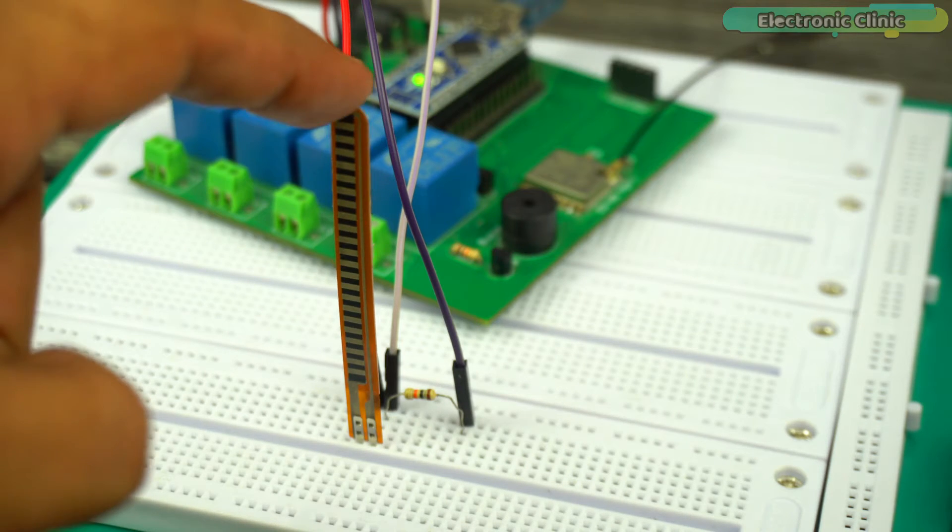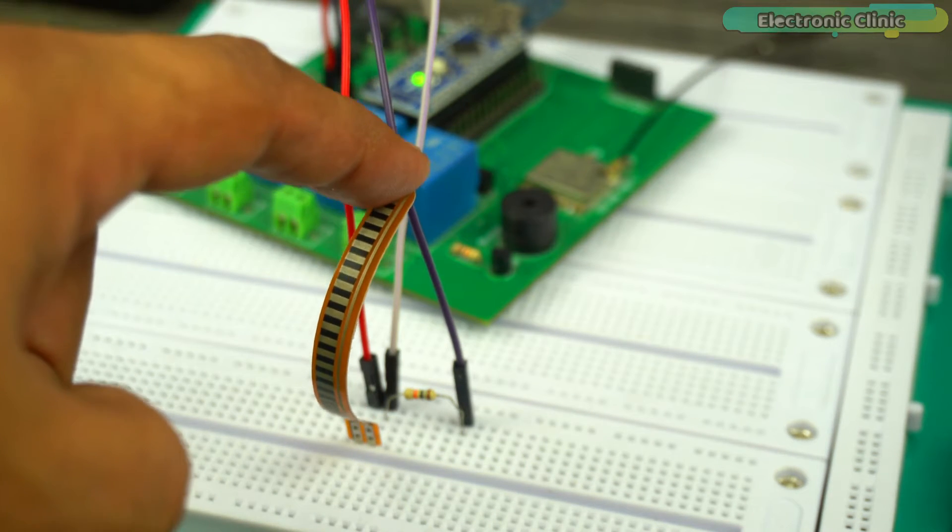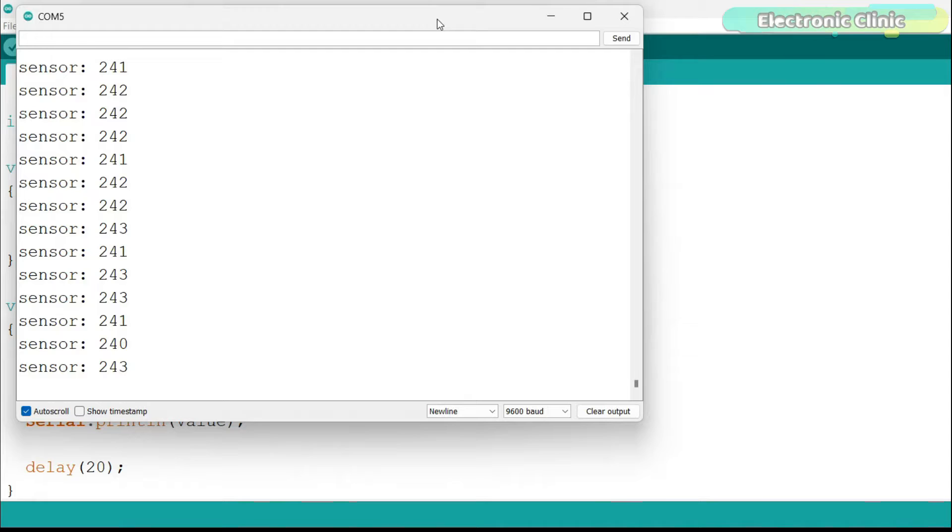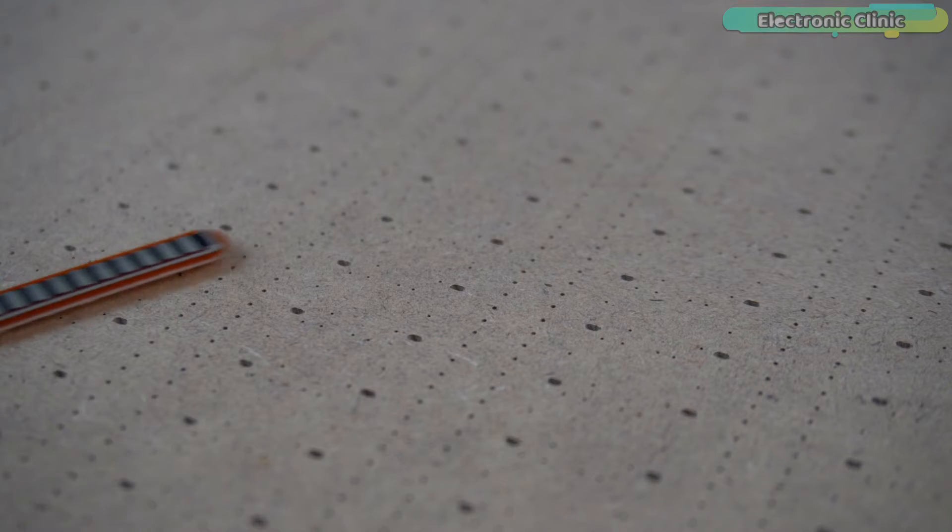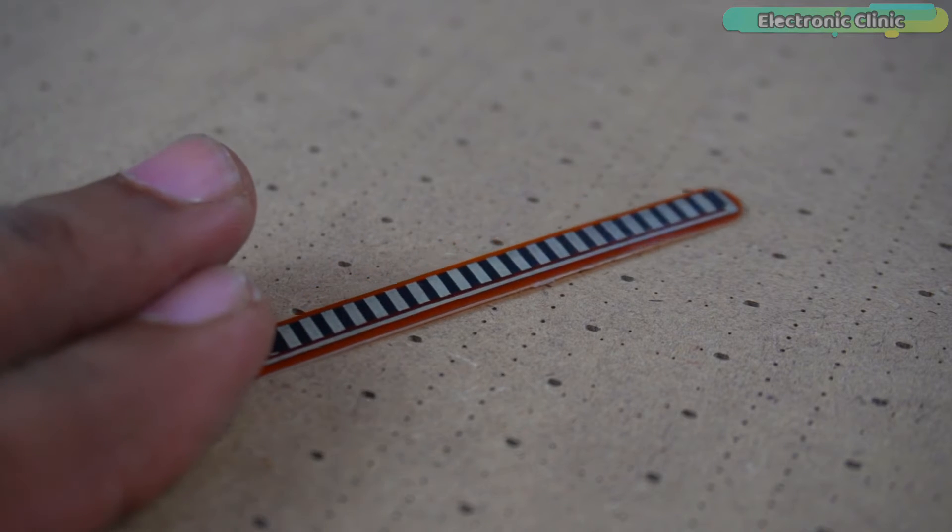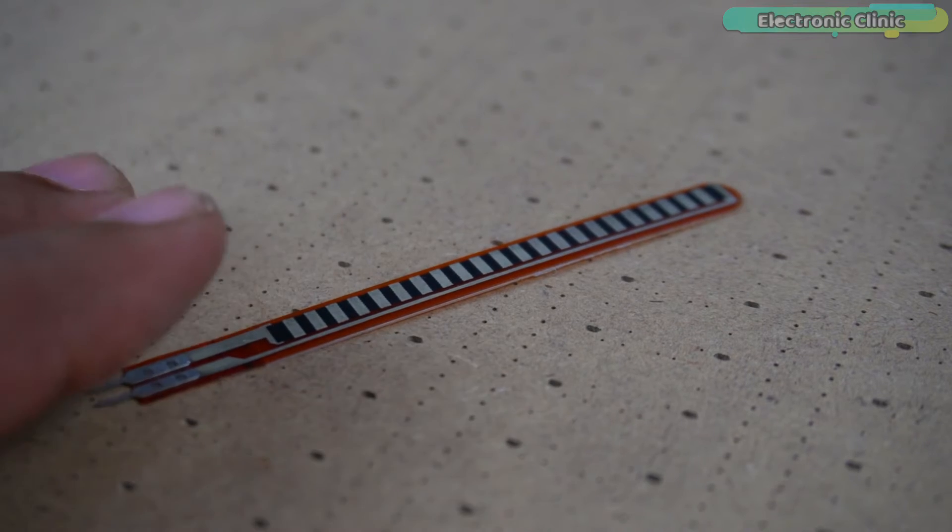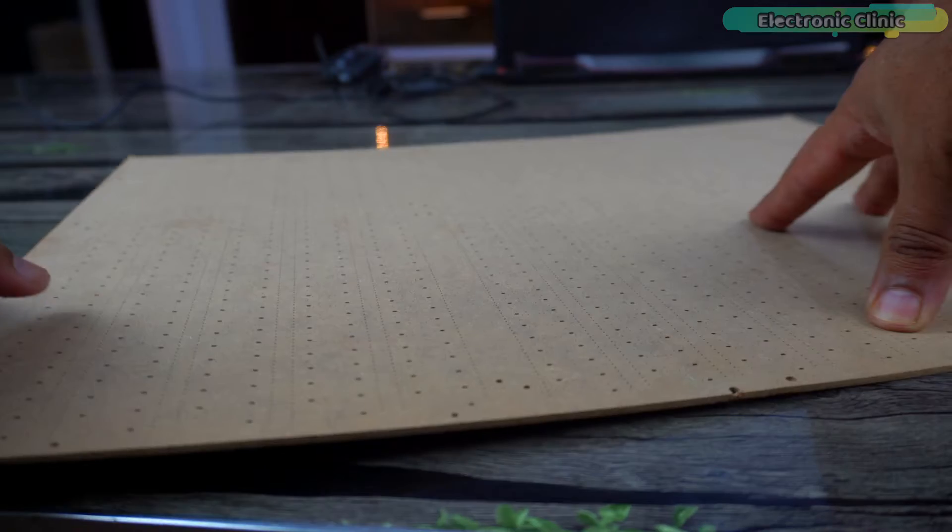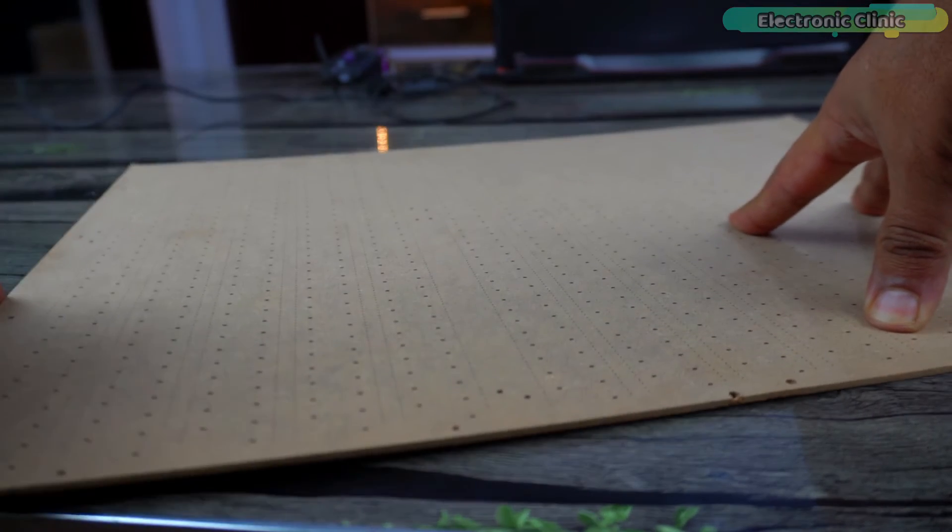In the first example, I will guide you through the process of reading and displaying flex sensor data on the serial monitor. This serves as a crucial foundation for understanding how a flex sensor operates and the type of data it can provide. In the second example, we will create a beginner's level project where we will monitor a sheet and when the sheet is bent to a certain level, a buzzer is turned on.